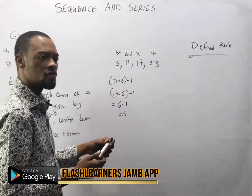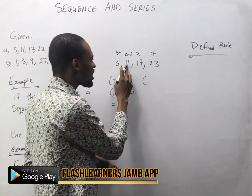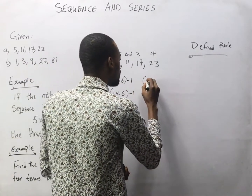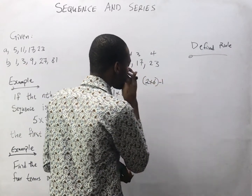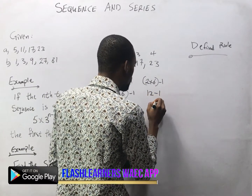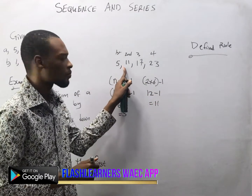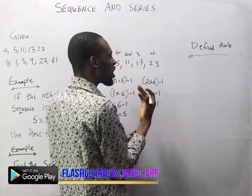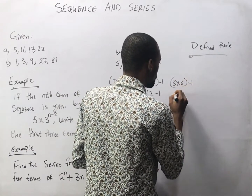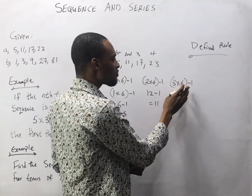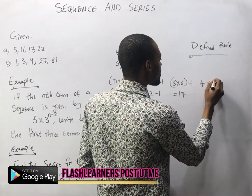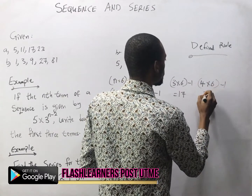Let's see if it works for the next terms. For the second term, n is 2, so we have 2 times 6 minus 1. 2 times 6 is 12, minus 1 equals 11 — the second term. For the third term, n is 3: 3 times 6 minus 1 equals 17. For the fourth term, n is 4: 4 times 6 minus 1 equals 23.